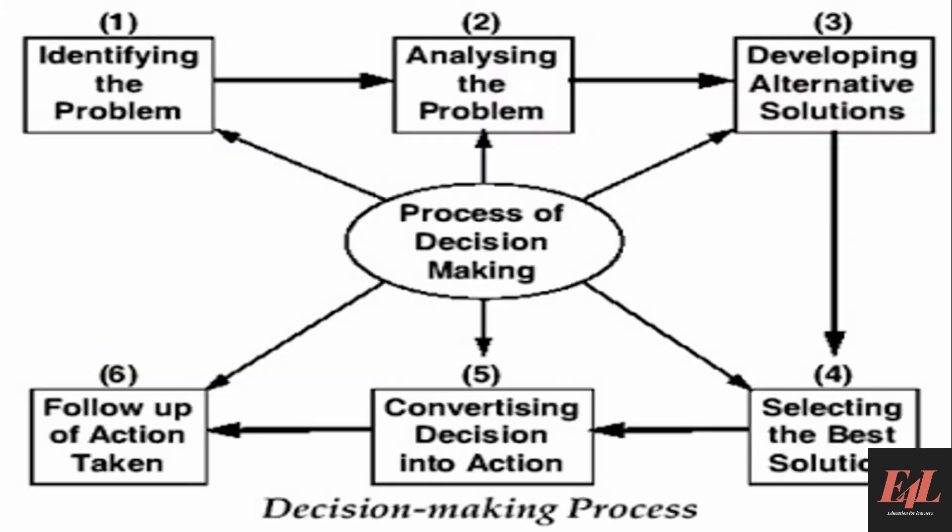Here is an image illustrating the steps: first, identifying the problem; second, analyzing the problem; third, developing alternative solutions; fourth, selecting the best solutions; fifth, converting decision making into actions; and sixth, follow-up of actions. These are all the steps that come under the decision-making process.